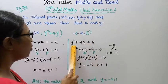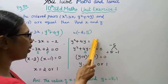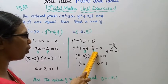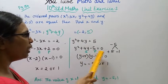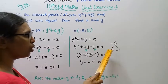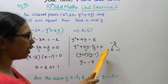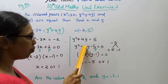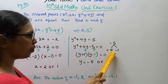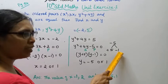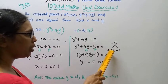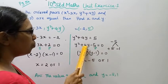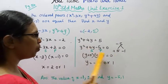y²+4y-5 is equal to 0. We need two numbers whose product is -5 and whose sum is +4. The greater number is positive and the smaller number is negative.